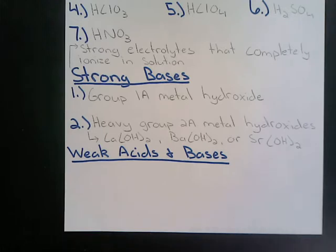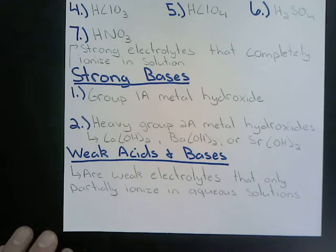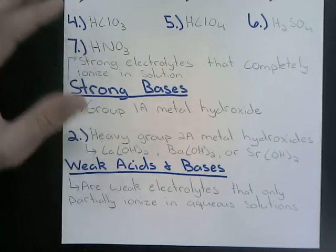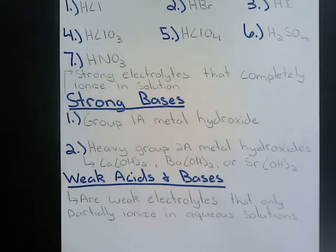For weak acids and weak bases: if you're not one of the strong acids or strong bases we talked about, you are considered a weak acid or weak base. These are compounds that in solution form weak electrolytes and are only partially ionized in aqueous solutions. Simply put, if they aren't listed as a strong base or one of the seven strong acids, and they're still an acid or base, they are a weak acid or base.